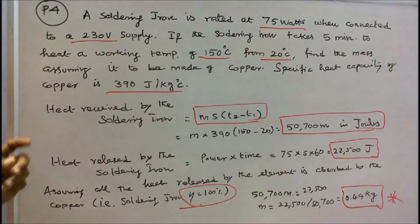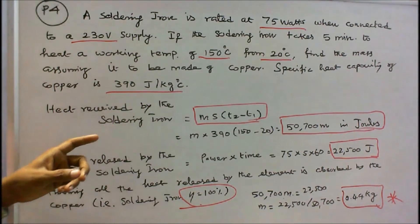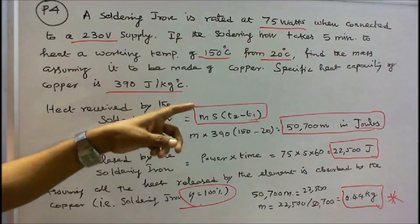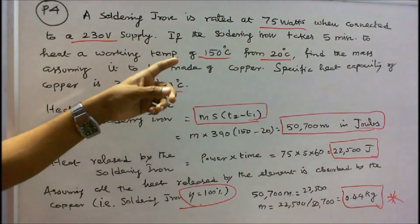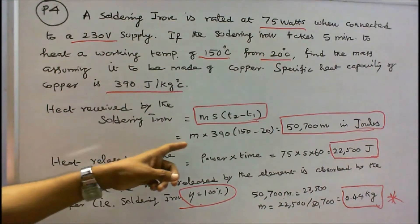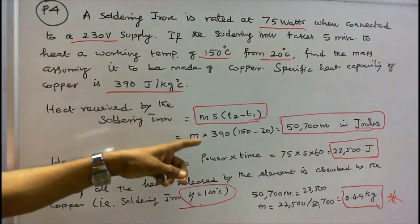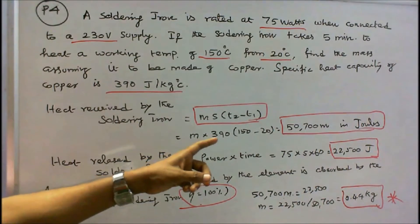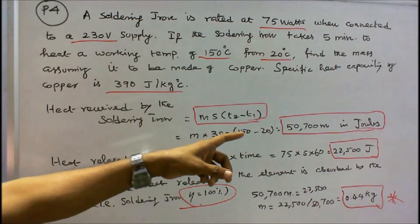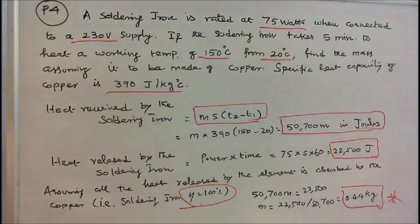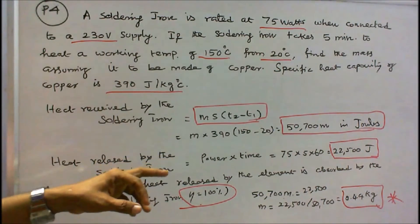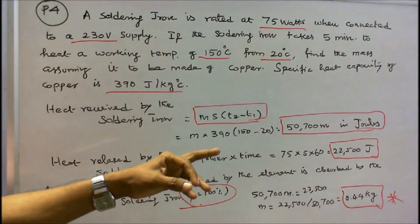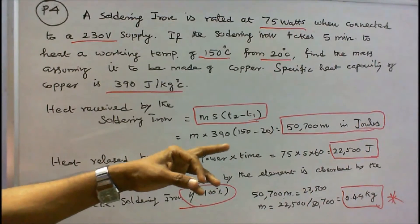Heat received by the soldering iron = M × S × (T2 − T1). T2 = 150, T1 = 20, so ΔT = 130. Therefore heat received = M × 390 × 130 = 50,700 M joules. Heat released by the soldering iron = power × time = 75 × 5 × 60 = 22,500 joules.